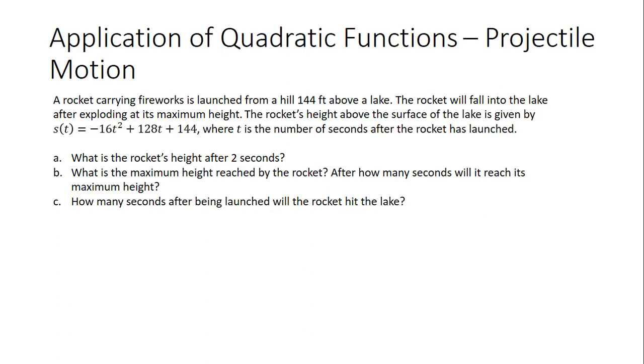Because t is the number of seconds and s is the height, we can find s(2) to answer this question. s(2) is negative 16 times 2 squared, plus 128 times 2, plus 144. And when we simplify that, we get 336. So the rocket is at a height of 336 feet after 2 seconds.